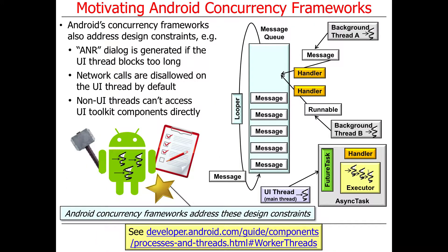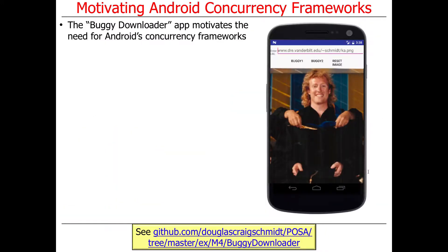That then motivates the use of Android concurrency frameworks, which we're going to talk about now. The two frameworks are the Handlers, Messages, and Runnables framework — or the Hammer framework, named after Thor's hammer, Mjolnir — and the AsyncTask framework. If you want to see what happens if you don't obey these rules, there's a little example called the buggy downloader, whose sole purpose is to tell you what not to do, and it motivates the need for these frameworks.